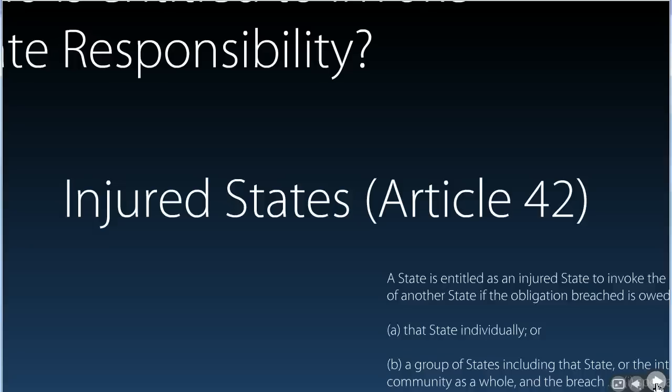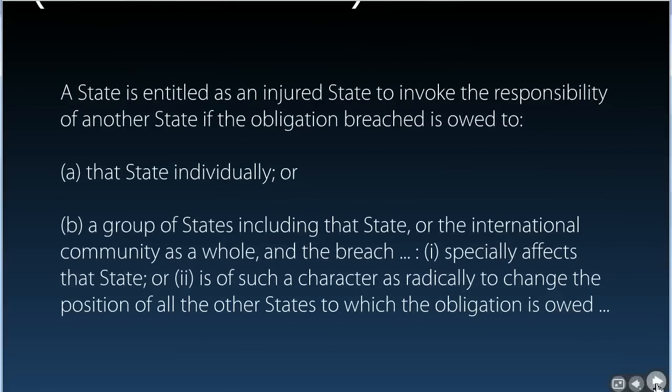A state that is injured by another state's wrongful act is always entitled to invoke state responsibility. A state is entitled as an injured state to invoke the responsibility of another state if the obligation breached is owed: (a) to that state individually, or (b) to a group of states including that state or the international community as a whole, and the breach either especially affects that state, or is of such a character as radically to change the position of all other states to which the obligation is owed. Let's think that through.